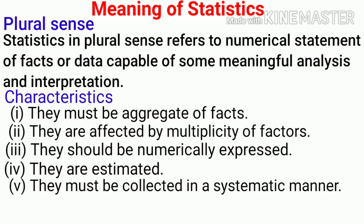Fifth characteristic is they must be collected in a systematic manner for a predetermined purpose. The data should be collected in a systematic manner. Data collected in a haphazard manner will not serve much purpose. The purpose for which data is collected must be decided in advance. The purpose should be specific and well-defined.